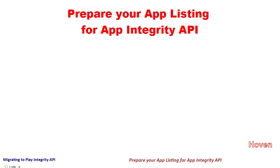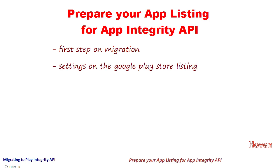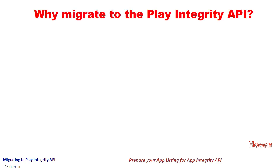In this tutorial, we shall learn our first step on migration of an Android app to the Play Integrity API. We shall make a few settings on the Google Play Store listing so that it is ready for integration to the new Play Integrity API. Before that, let's briefly understand the basic purpose behind a migration to the Play Integrity API.